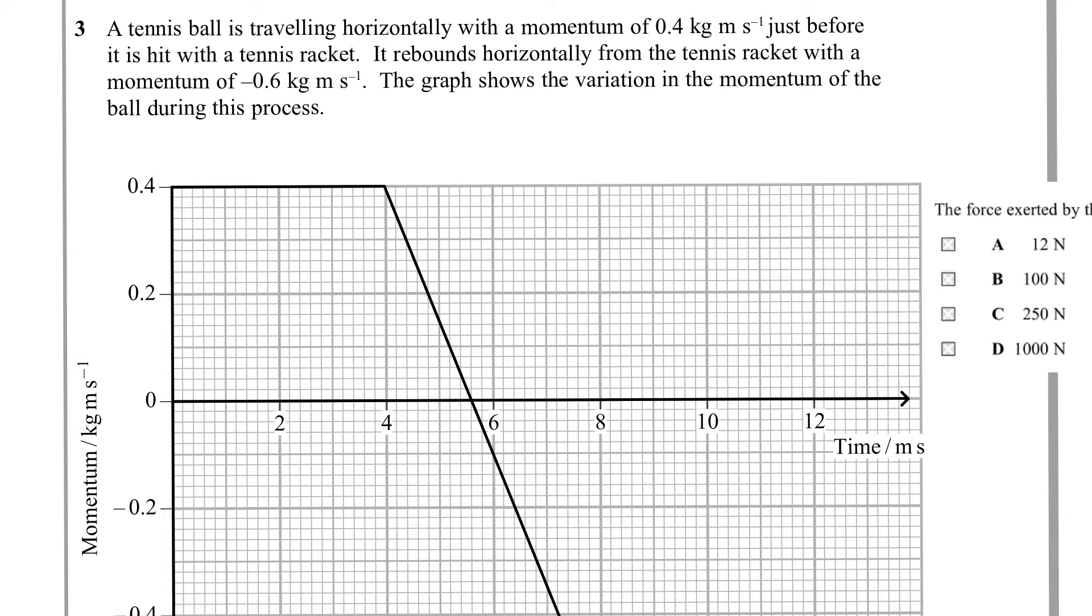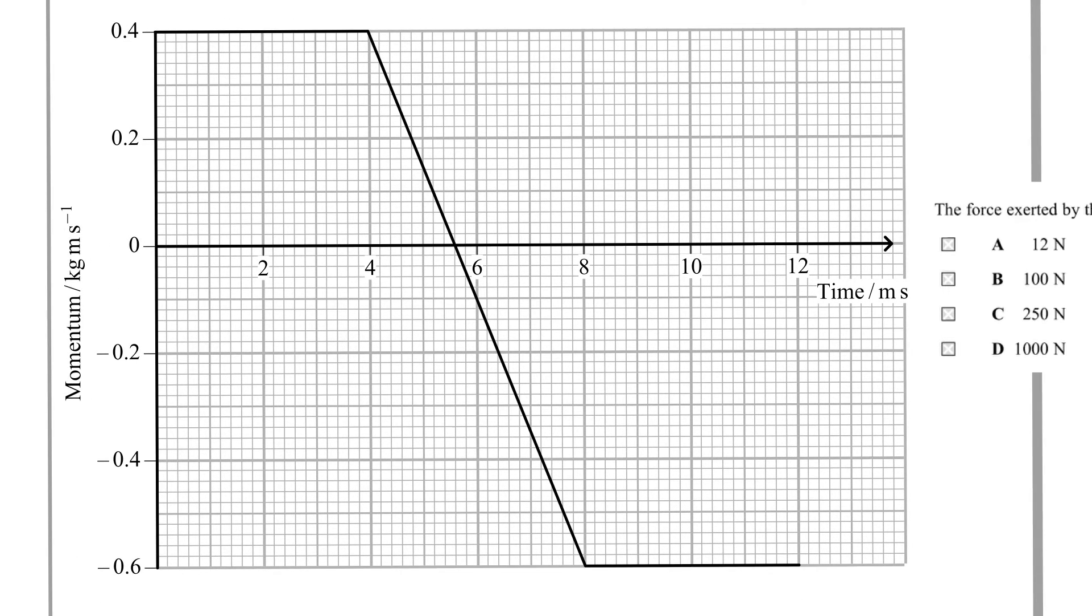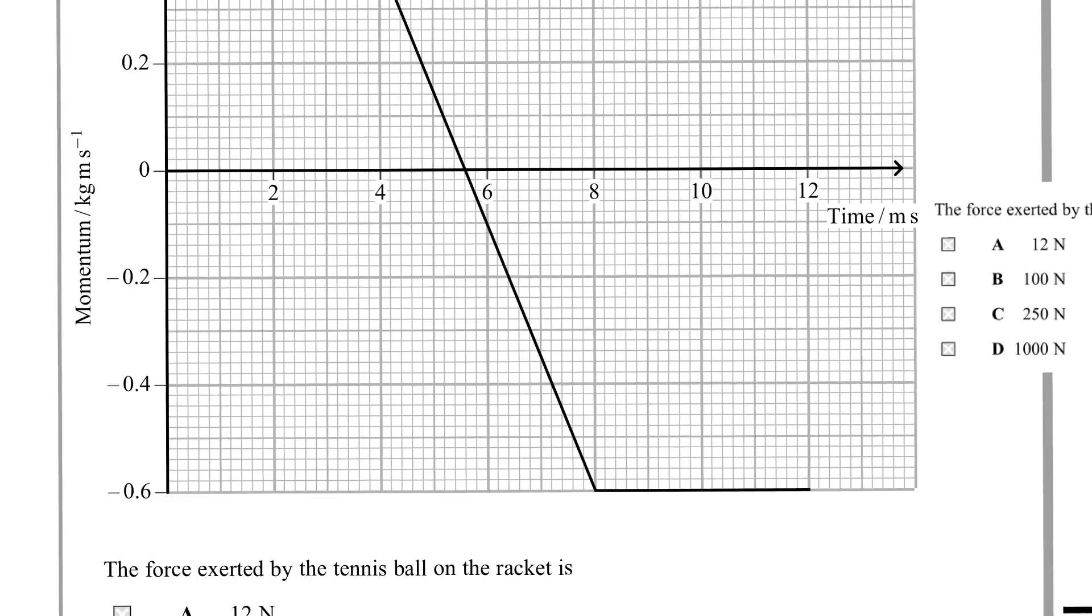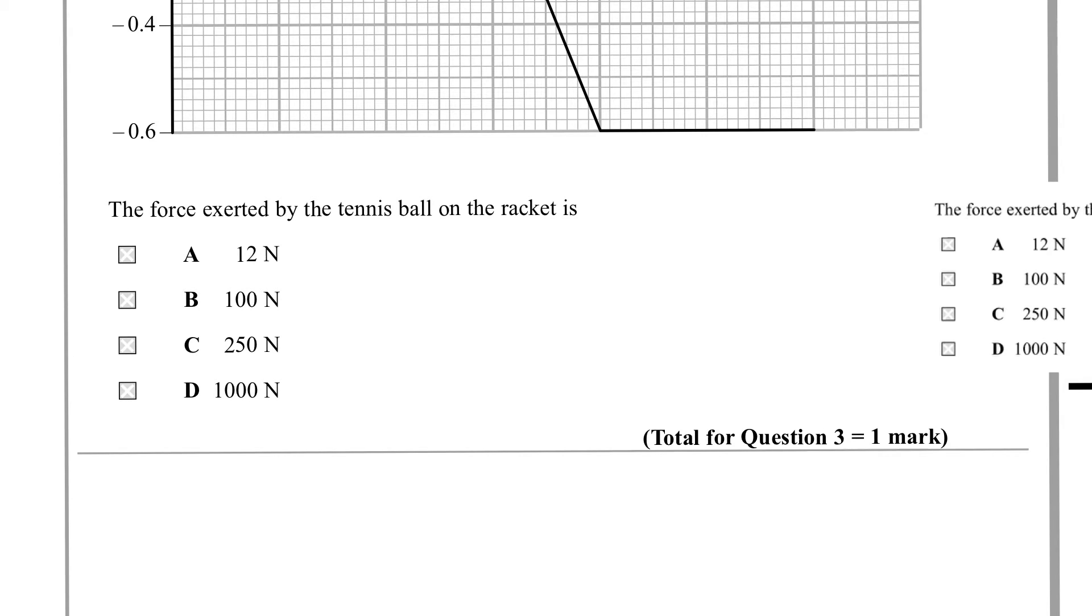Question 3. A tennis ball is traveling horizontally with a momentum of 0.4 kg m per second just before it is hit with a tennis racket. It rebounds horizontally with a momentum of 0.6 kg m per second. The graph shows the variation of the momentum of the ball during this process. So we have the original momentum, then we have a reversal of momentum and it goes to this value.